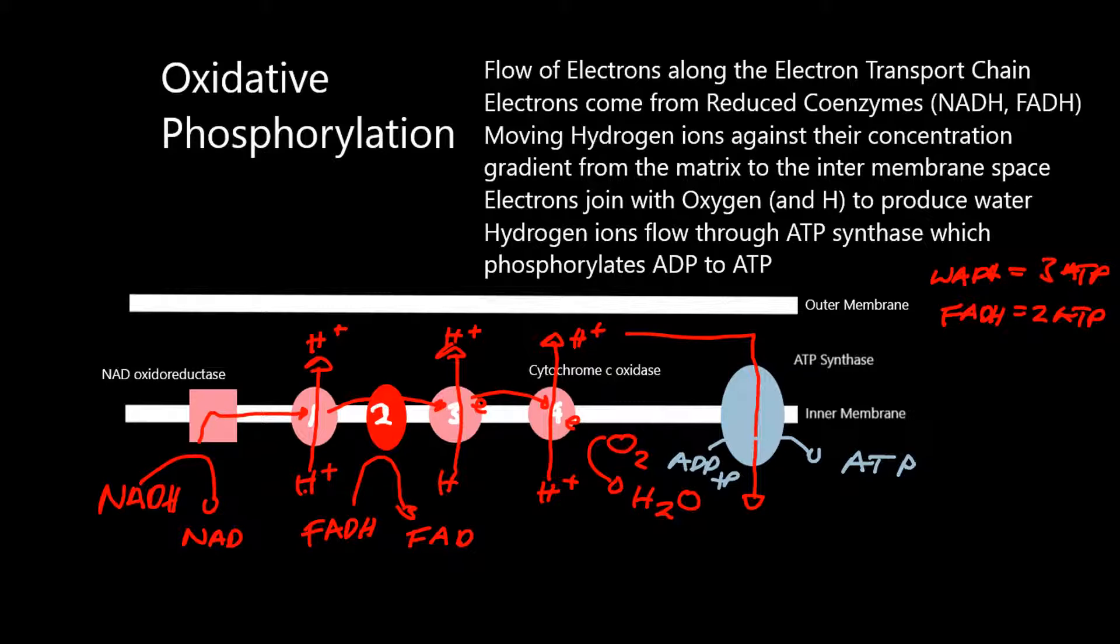Just to summarize again, oxidative phosphorylation is the flow of electrons through the electron transport chain. Those electrons come from the reduced coenzymes that are produced in glycolysis, Krebs cycle, and the link reaction.